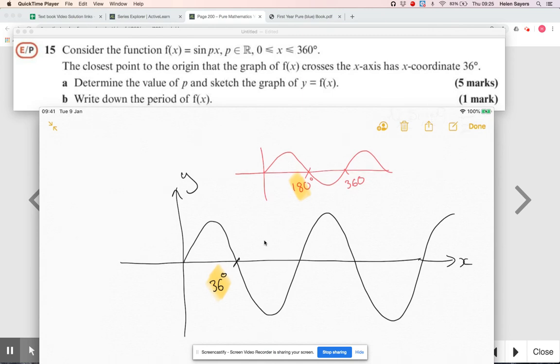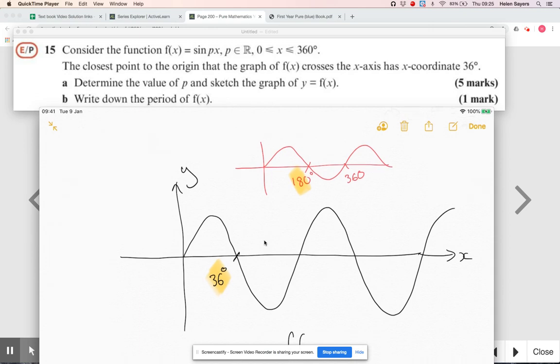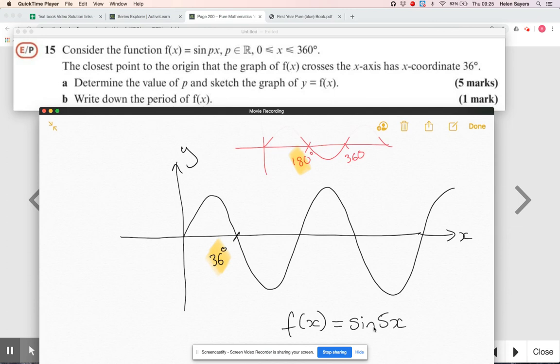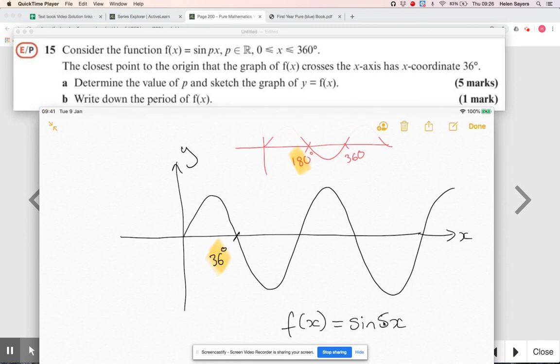If you're going in the x direction and you want to squash it in by a fifth, then that would mean that p is five. When we're stretching in the x direction, your scale factor or your stretch factor is going to be one over that. So let's be really clear: p is five.